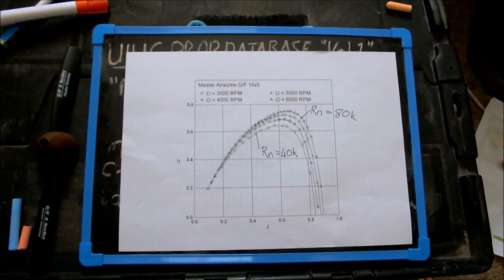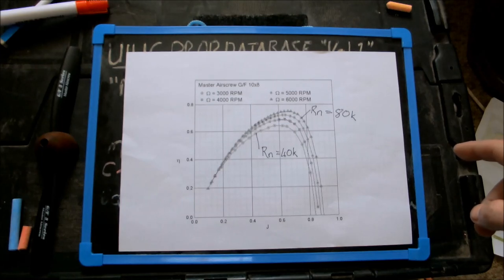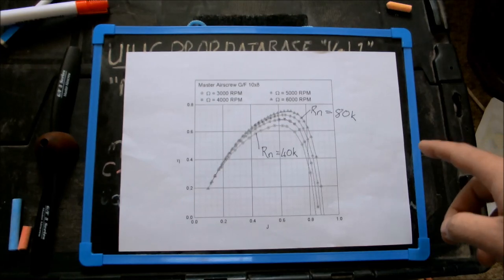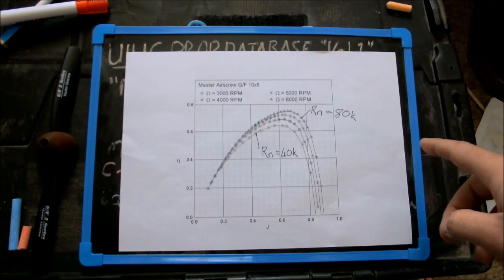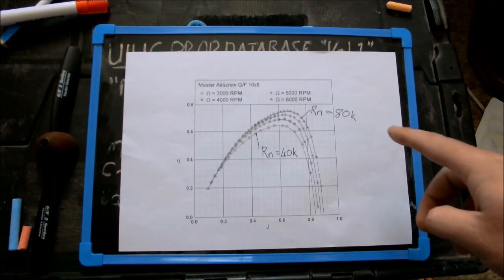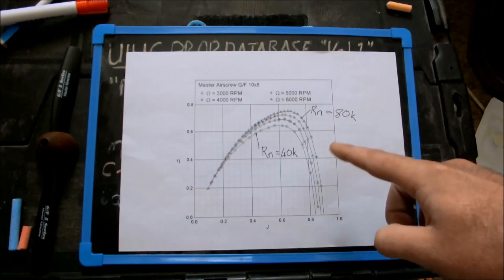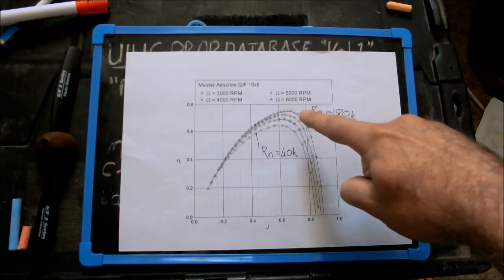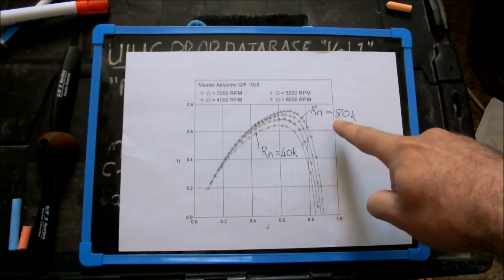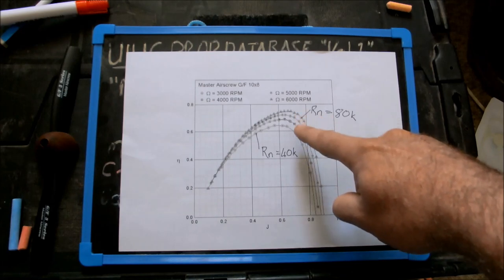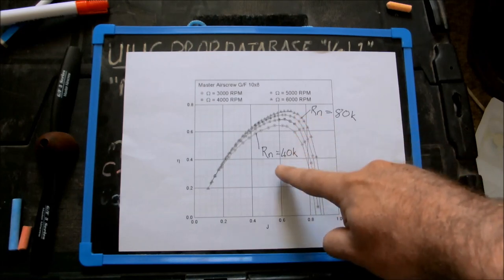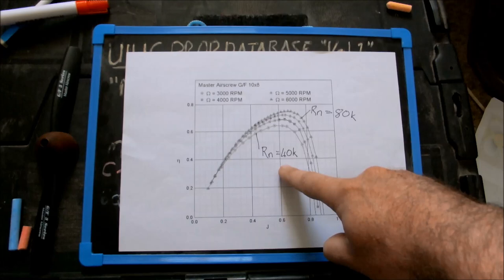Now the folks at the University of Illinois were specifically interested in investigating the effect of changing Reynolds numbers on propeller performance. So they varied the RPM and the wind tunnel velocity to simulate different Reynolds numbers. The value that I used for my calculations, the top curve, which is the 80,000 Reynolds number. And you can see how the efficiency falls off as the Reynolds number reduces to 40,000.